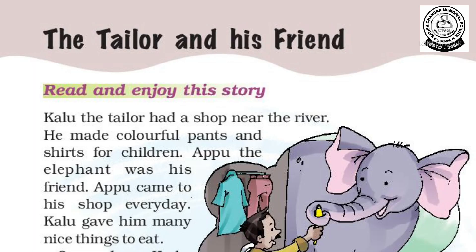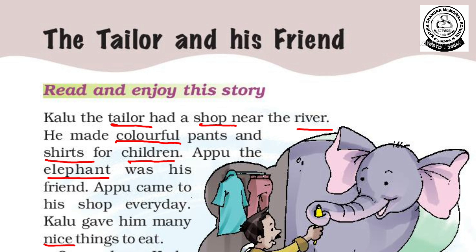Kaloo the Tailor had a shop near the river. He made colorful pants and shirts for children. Appu, the elephant, was his friend. Appu came to his shop every day. Kaloo gave him many nice things to eat.